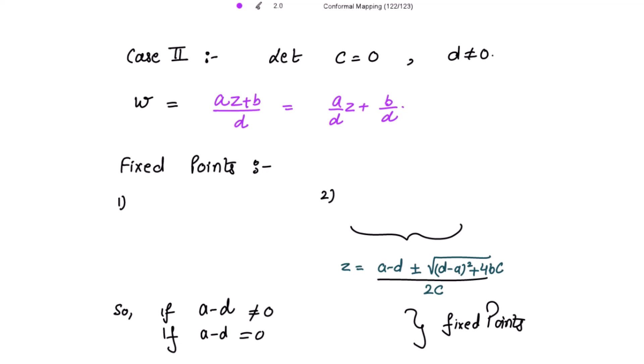For the fixed points, we have to put w equal to z. Putting w equal to z, we get z equal to (a over d)z plus (b over d). Taking (a over d)z to the other side and factoring z, we get z times (1 minus a over d) equals b over d. Finally, z equals b over (d minus a). And another fixed point can be obtained from the roots of the quadratic equation, giving z equal to (a minus d) plus or minus square root of discriminant over 2c.